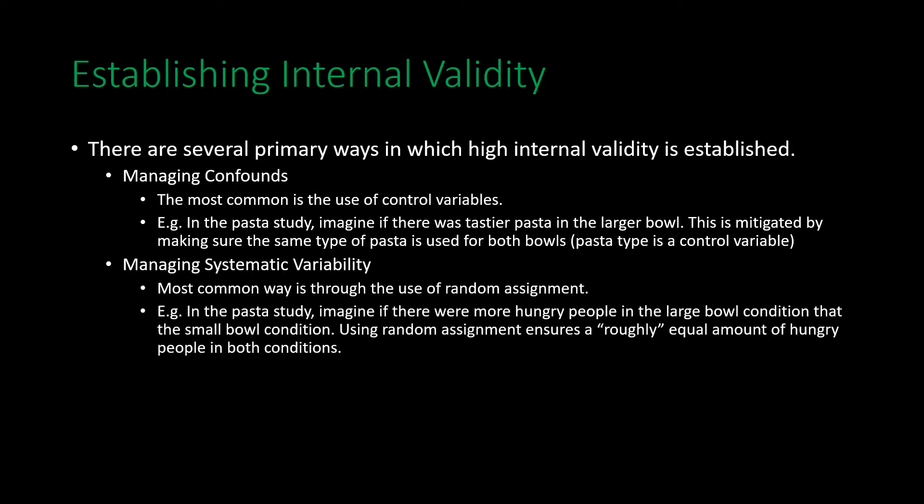Next, managing systematic variability: this occurs when a second variable changes its condition or levels in lockstep with the independent variable. Having such a synchronous relationship makes it very difficult to know which of those two variables is ultimately driving the effect observed in the dependent variable.